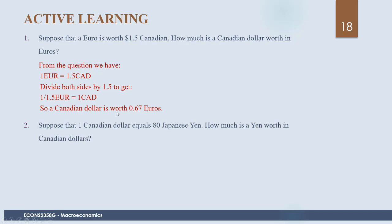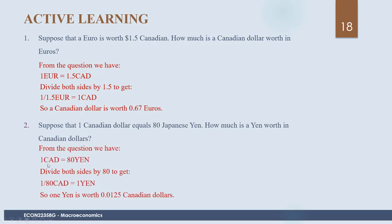Next question: Suppose one Canadian dollar equals 80 Japanese yen. How much is one yen worth in Canadian dollars? We divide both sides by 80, and we get that one yen is worth 1 ÷ 80 = 0.0125 Canadian dollars.